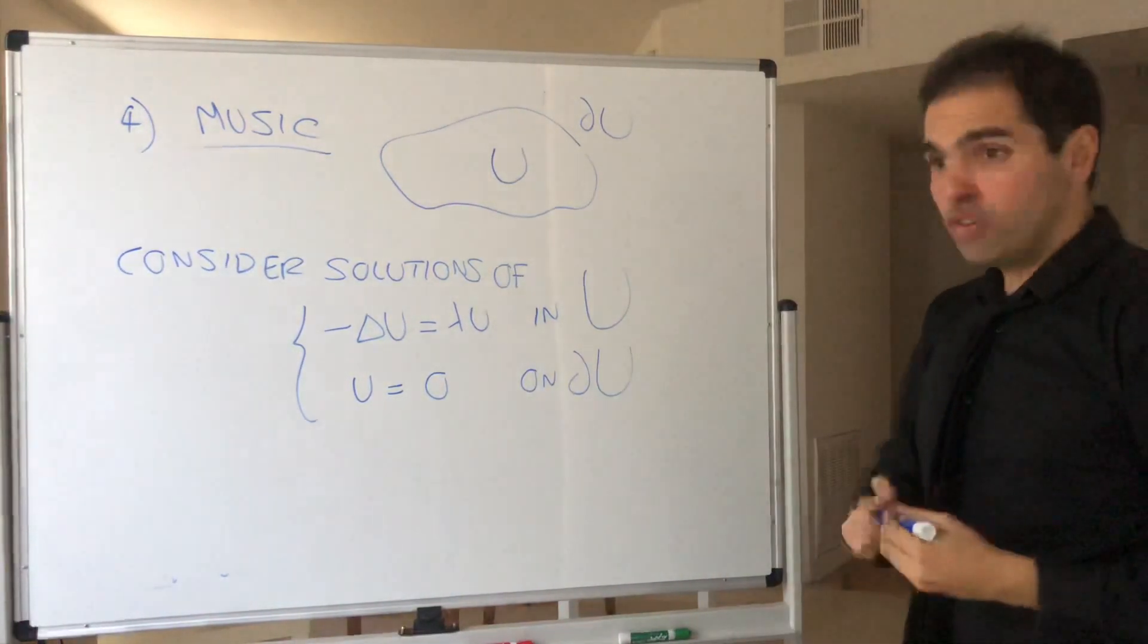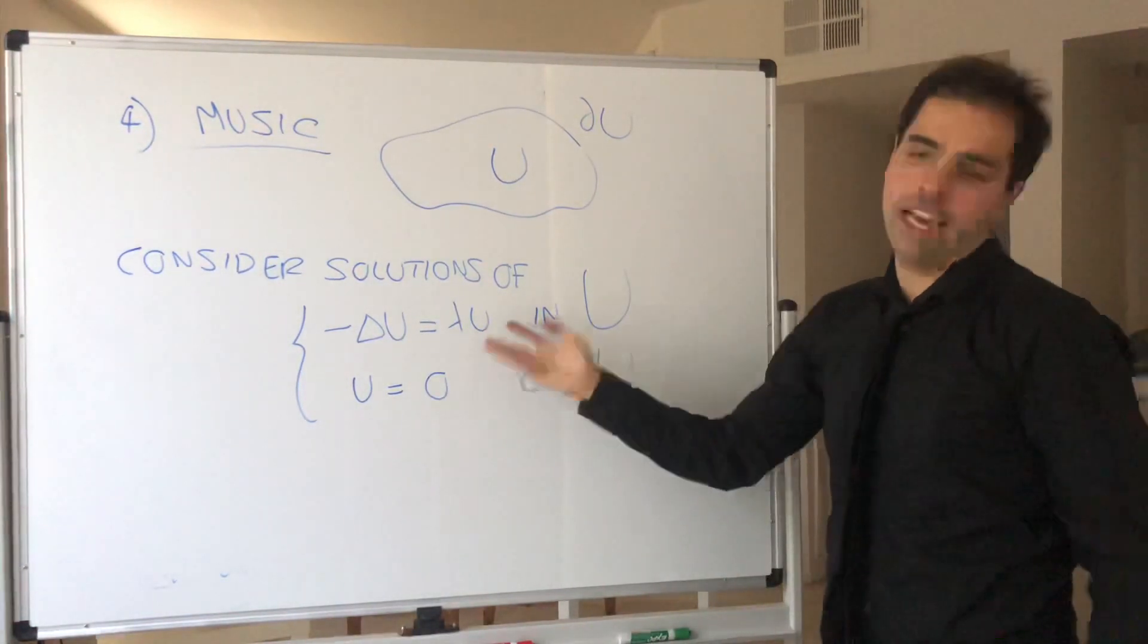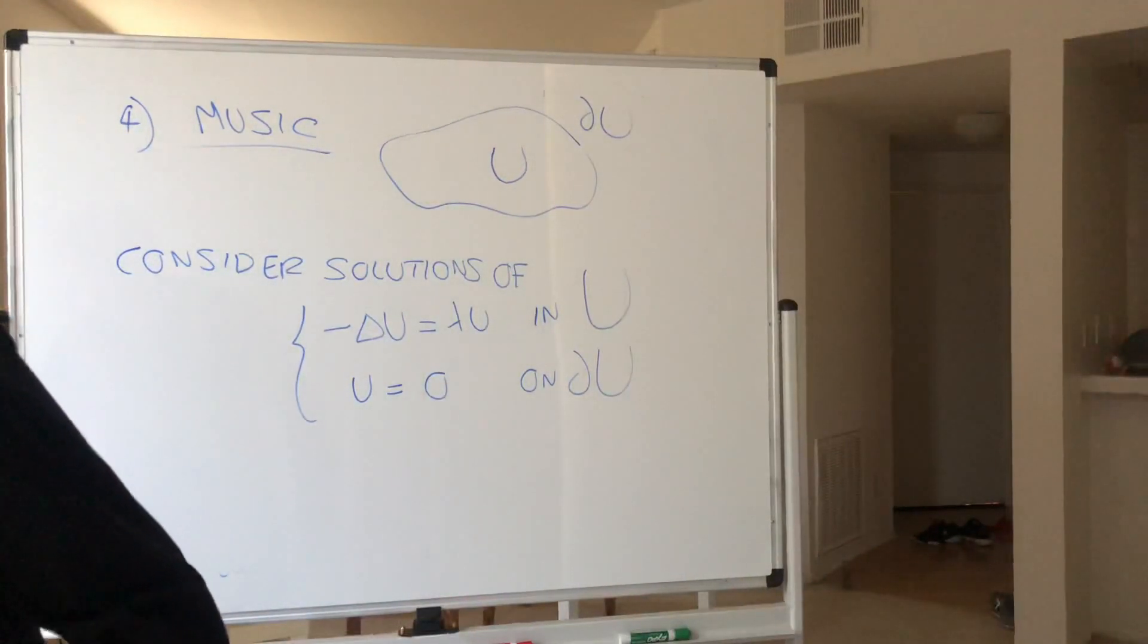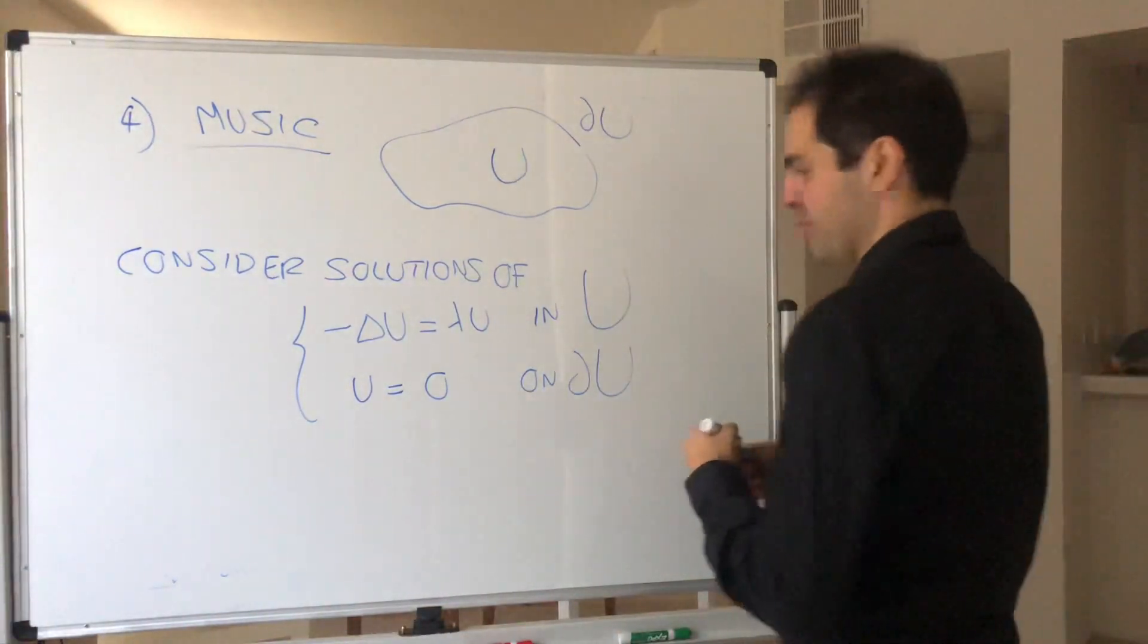Now, of course, zero is a solution, right? Laplacian of zero is zero. Lambda of zero is zero. So that's not a problem. But the question is, when are there non-trivial solutions?